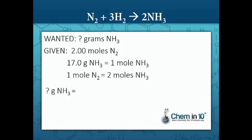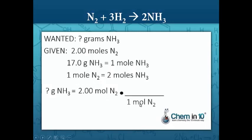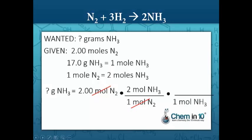We set up our problem: question mark grams of ammonia equals two moles of nitrogen. We want to cancel out the units moles of nitrogen, so we put one mole of nitrogen in the denominator, equal to two moles of ammonia — the moles of nitrogen cancel out. Now to convert moles of ammonia to grams of ammonia, we put one mole of ammonia in the denominator to cancel it out, equal to 17.0 grams of ammonia in the numerator.